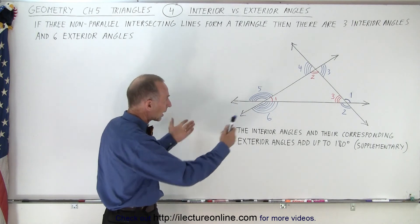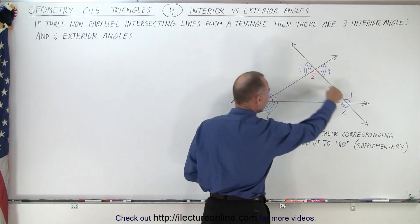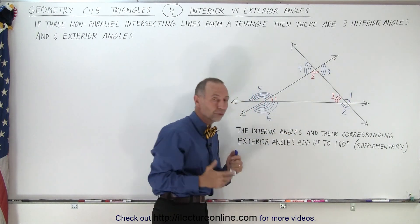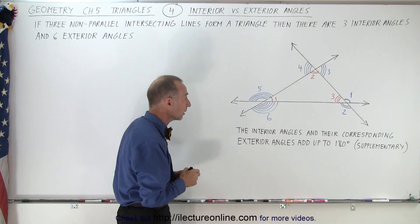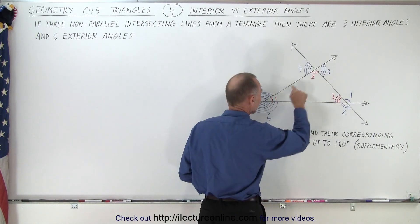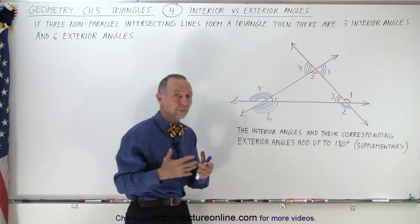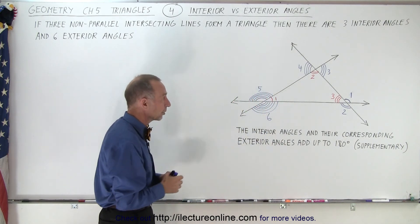So take a look. Here we have three lines. The three lines do form a triangle because none of the lines are parallel to any of the other lines. And so we have three interior angles, and of course we already know that the sum of the measures of those three angles add up to 180 degrees.